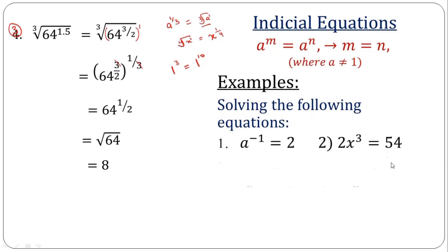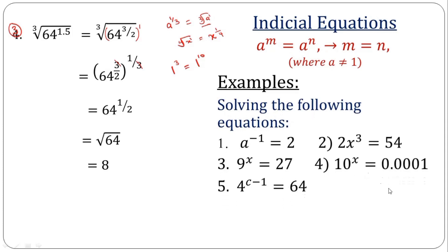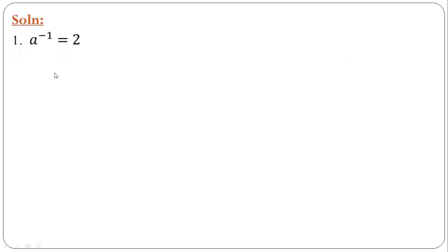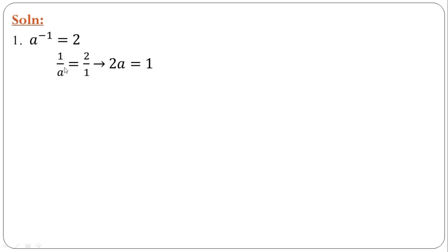We have about six examples to solve. The first one asks us to find A. Apply the negative index rule: remove the negative index making this 1 over A raised to the power of 1, which is just A, equal to 2 all over 1. Cross-multiplying, 2 times A equals 1, and dividing both sides by 2 gives the value of A as 1 over 2. In the second example, first clear the coefficient on the left-hand side by dividing both sides by 2.